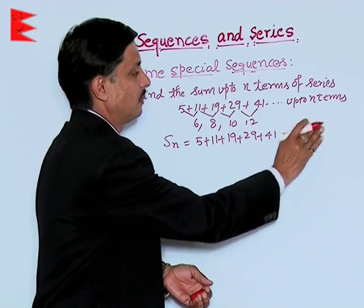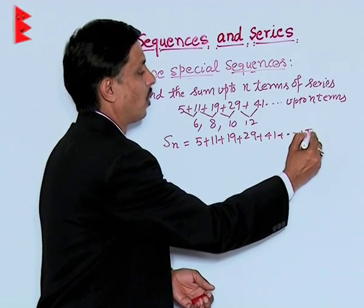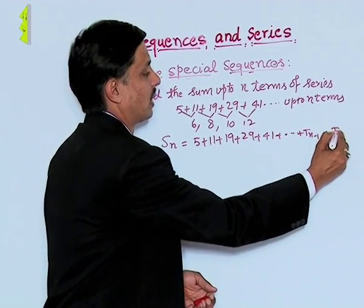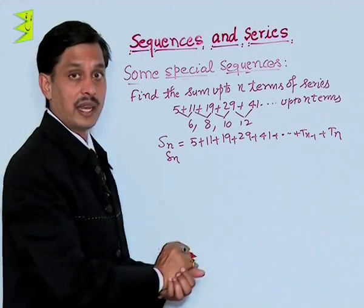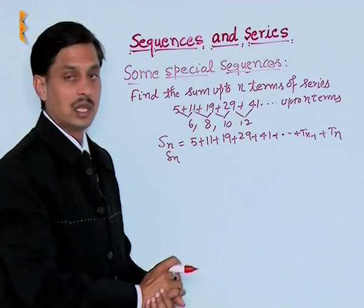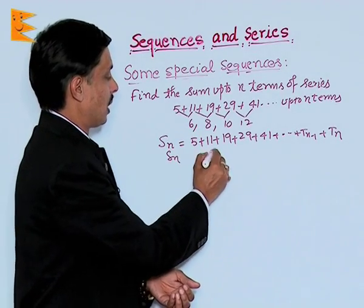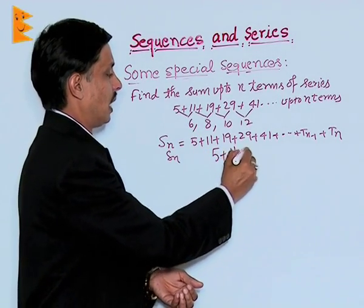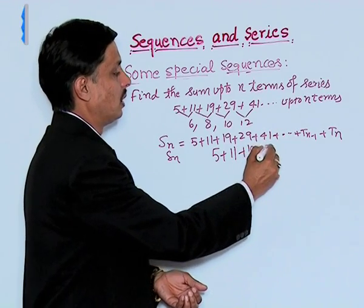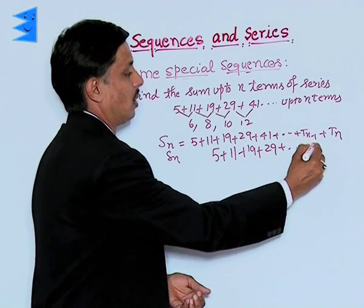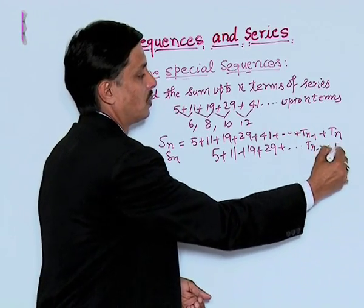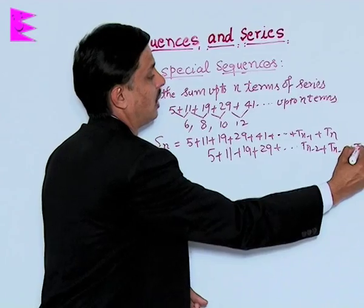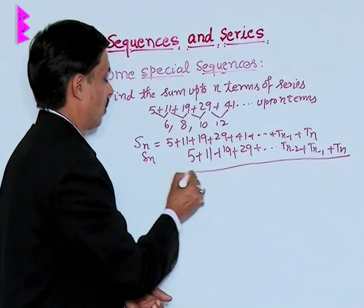If T_n is the last term, then the term before it has to be T_n minus 1. I am writing again S_n by just increasing one term. This becomes 5 plus 11 plus 19 plus 29 plus dot dot dot. Here will be T_n minus 2, this will be T_n minus 1, and T_n will go one step forward.